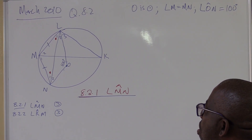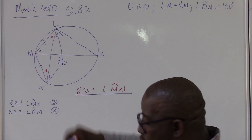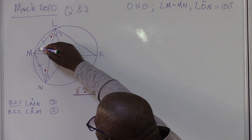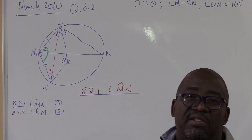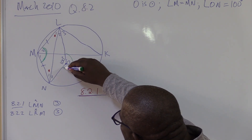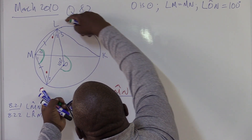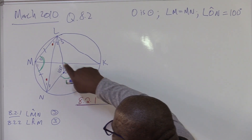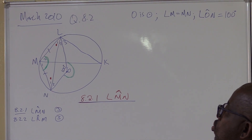The first question asks for the size of angle LMN — this whole angle at the circumference. Looking at this angle at the center and comparing it to the angle at the circumference: the arc goes to the center and the same arc goes to the circumference. Hence, the one at the center is two times bigger than the one at the circumference. That becomes crucial.